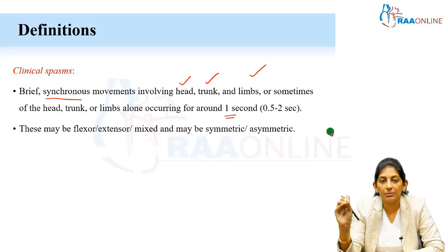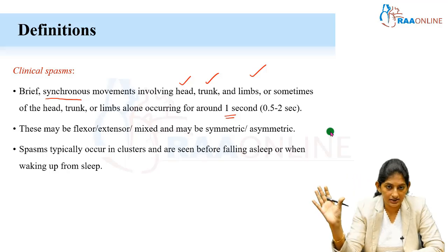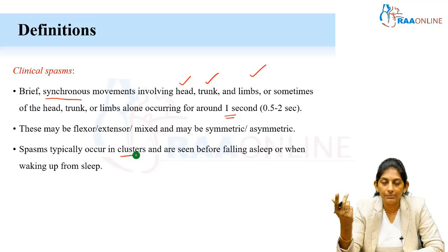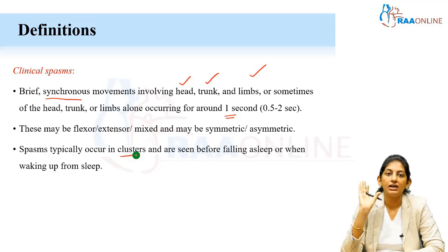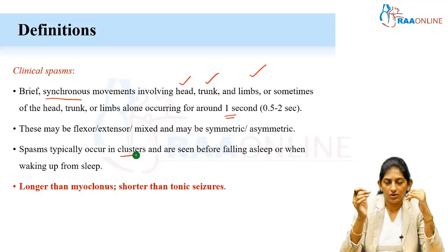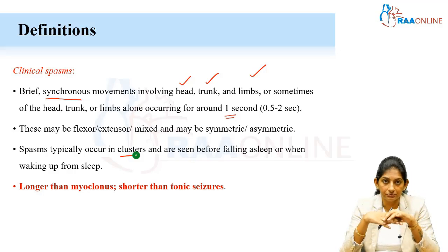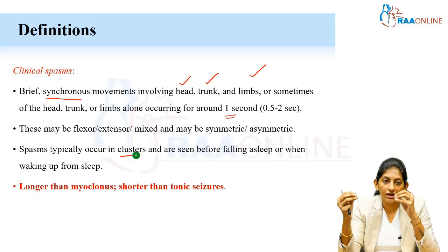Spasms can be flexor, extensor, symmetric, or asymmetric. They most often occur in clusters and typically appear just before the child falls asleep or when waking up from sleep. You can advise parents to get ready with their mobile phone when the child is about to sleep. There is always a doubt: is it a myoclonic jerk or a seizure? Myoclonus has even shorter duration than epileptic spasms, while tonic seizures are longer than spasms.